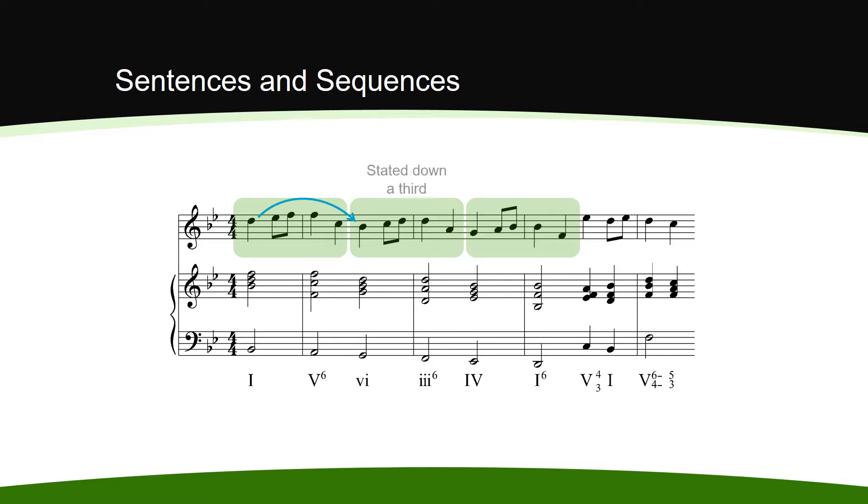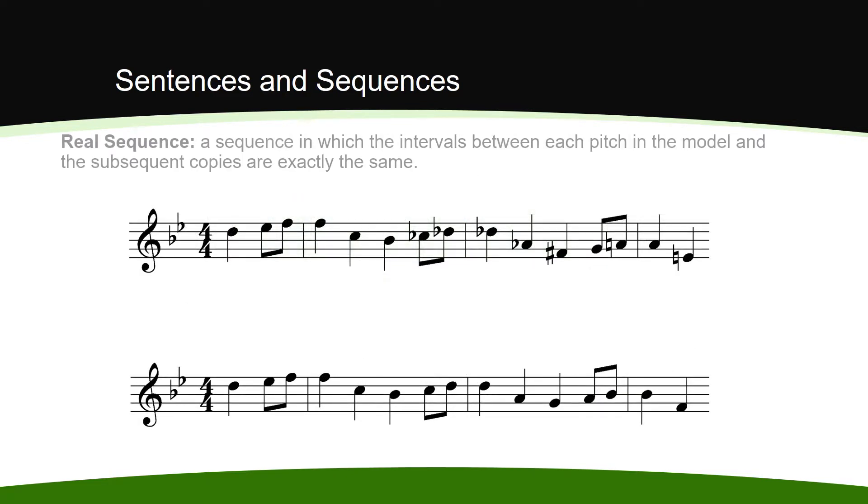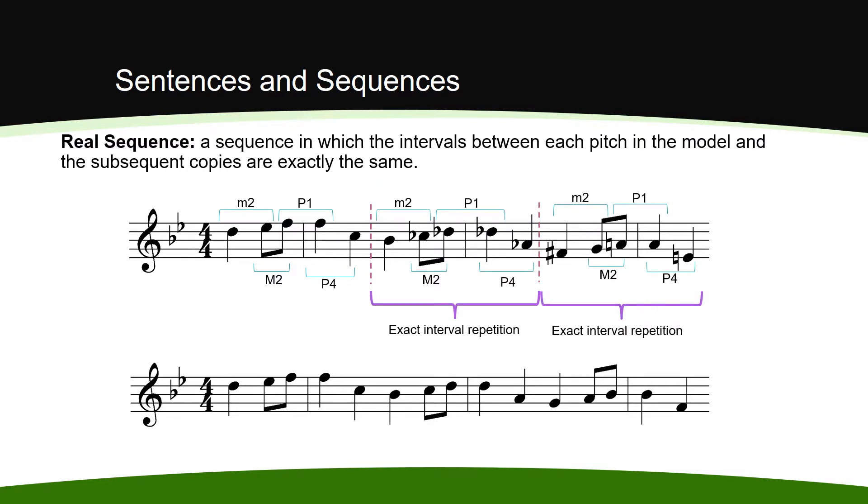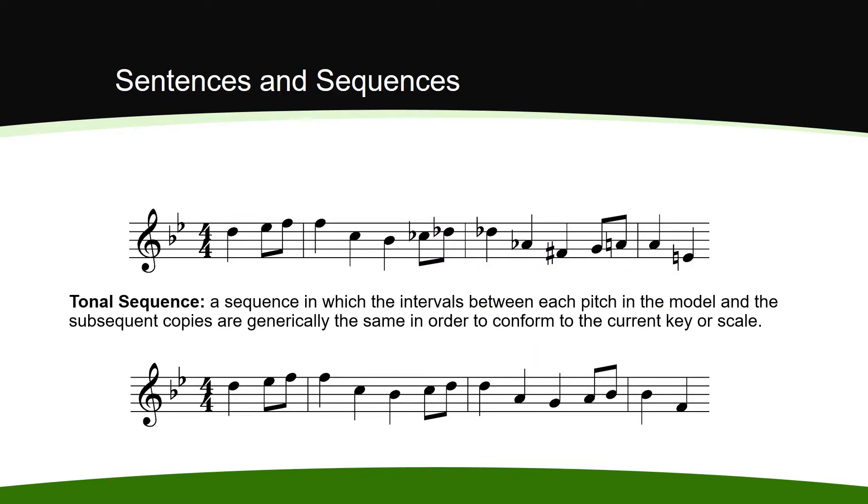Melodic sequences can be real, which means that the intervals between each pitch in the model and the following copies are exactly the same, or they can be tonal, meaning that the intervals between each pitch in the model and the subsequent copies are only generically the same in order to conform to the current key signature.